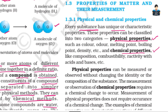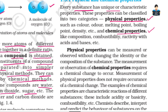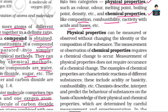Examples of chemical properties include composition, combustibility, and reactivity with acids and bases. Physical properties can be measured or observed without changing the identity or composition of a substance. Chemical properties require a chemical change to be measured — what is the difference for a chemical change?